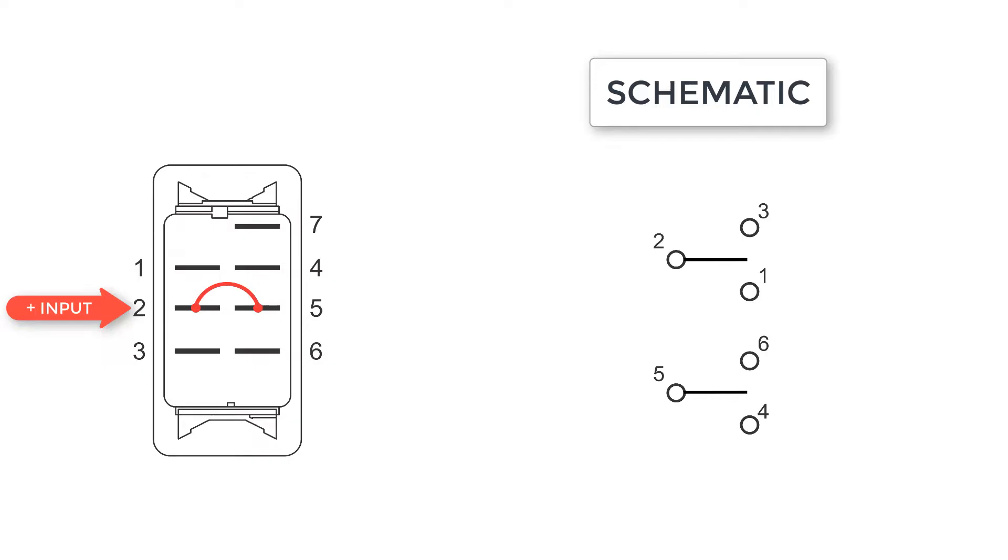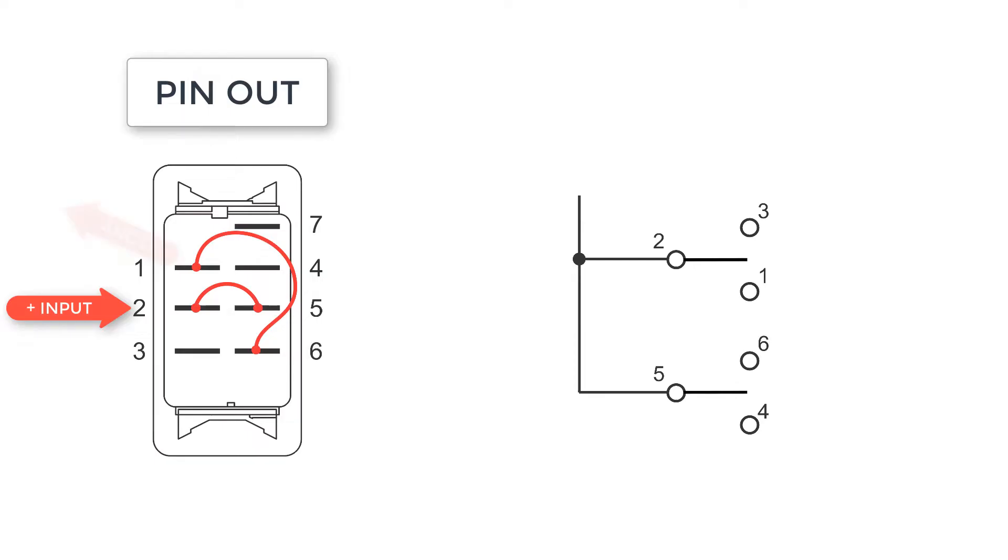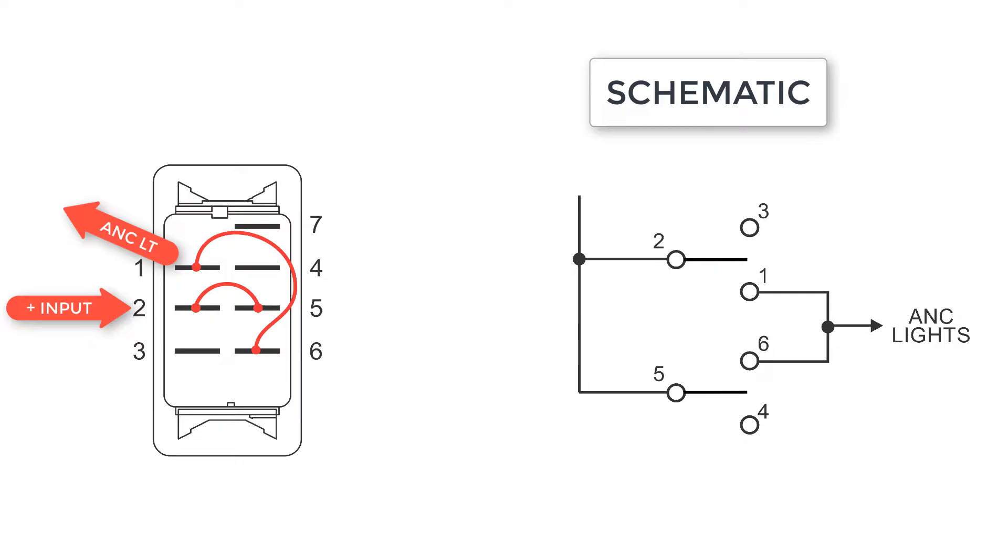A second jumper between terminals 1 and 6 and then out to the anchor light allows that light to come on in both up and down positions. Finally, the nav light goes on terminal 3.